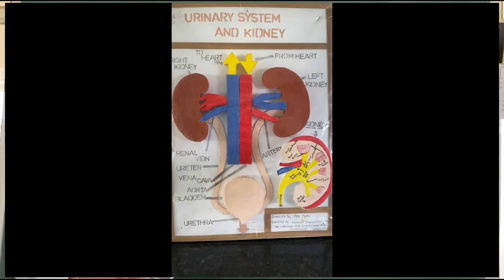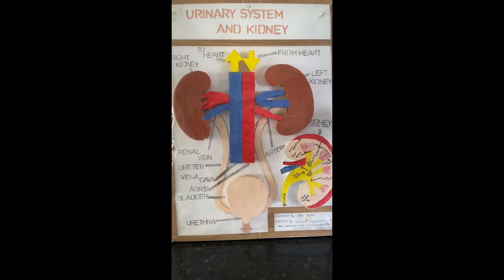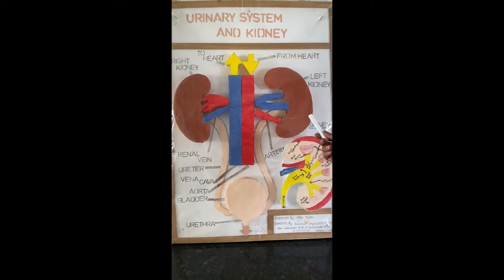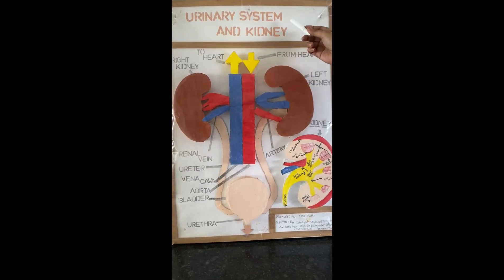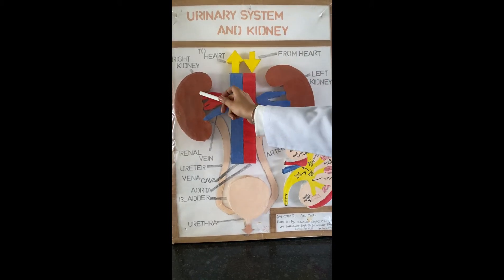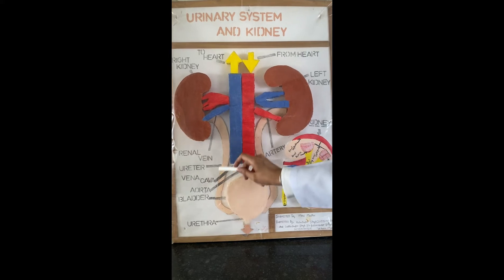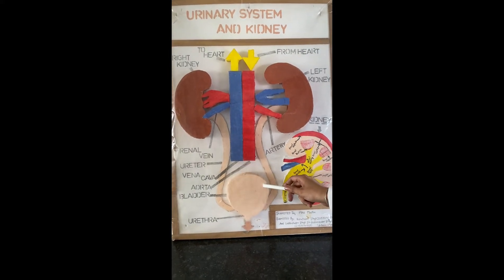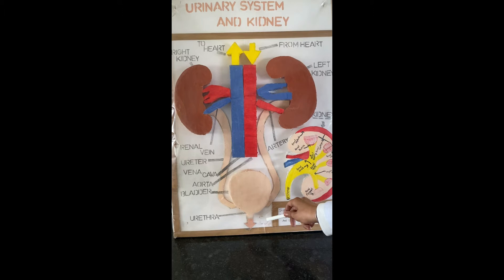Now let us discuss the urinary system using this beautiful model made by our students. As discussed before, the urinary system has the following parts: a pair of kidneys, a pair of ureters, one urinary bladder, followed by urethra.